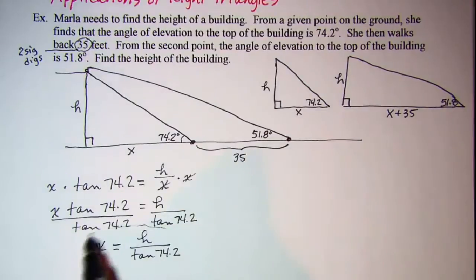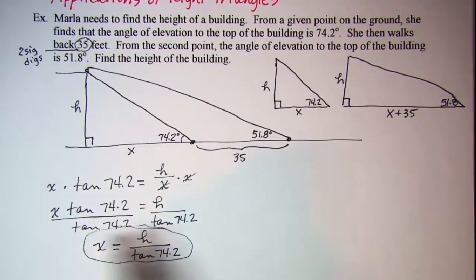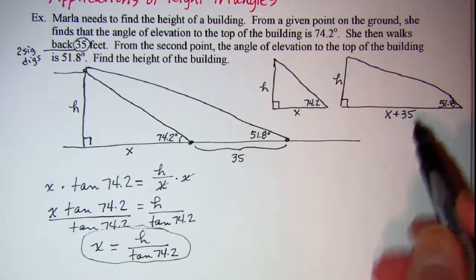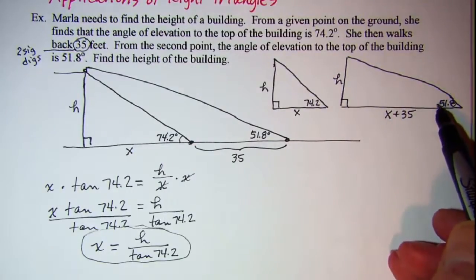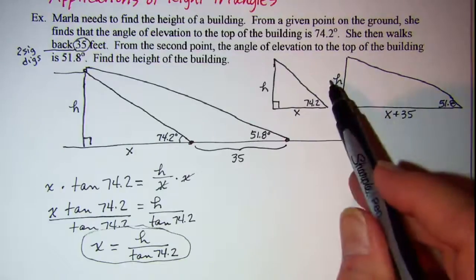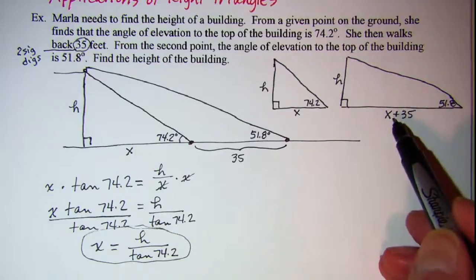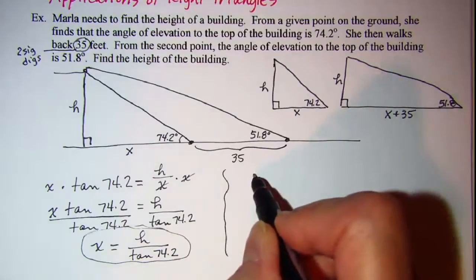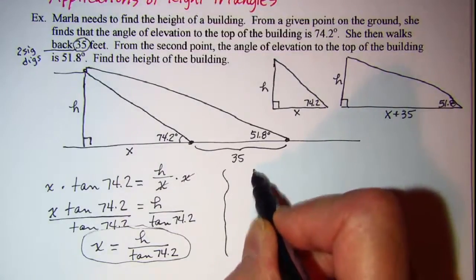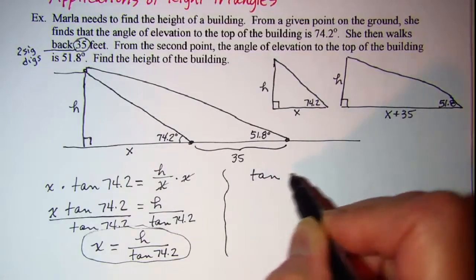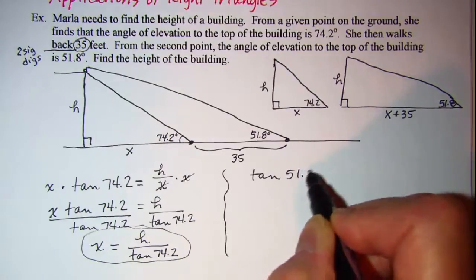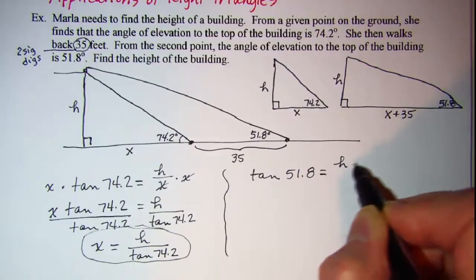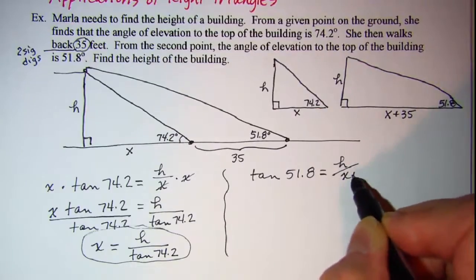Let's save this for later. Now we can also use tangent on this triangle. Opposite is H, adjacent is X plus 35. So tangent of 51.8 equals H over X plus 35.